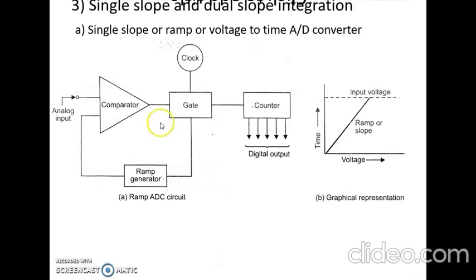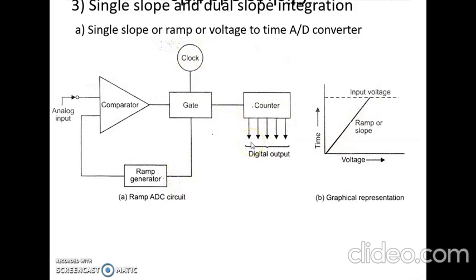The single slope ADC consists of a comparator, a gate, a clock generator, a binary counter, and a ramp generator. This ramp generator generates a continuously increasing analog voltage, which is why it is also called a ramp analog-to-digital converter. The ramp generator produces an analog voltage that increases at a constant rate with respect to time, and this is applied to a comparator where it is compared with the analog voltage from the sensor.